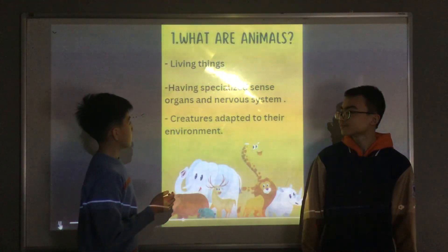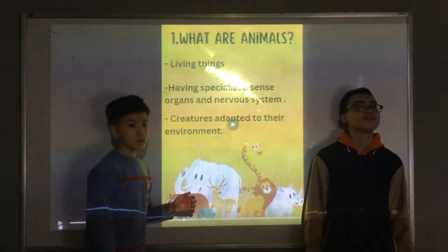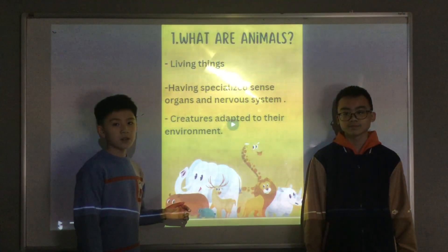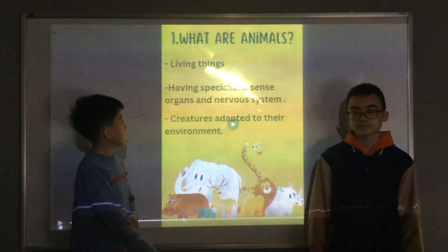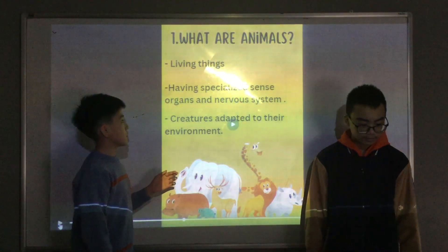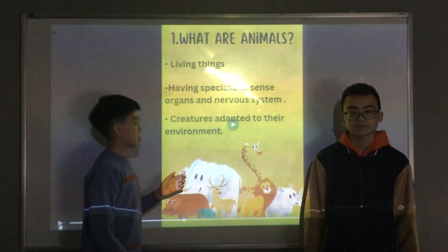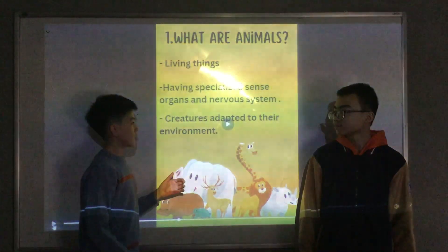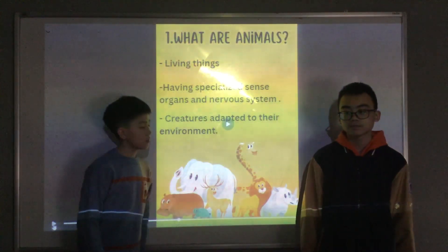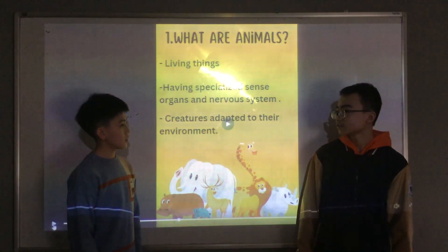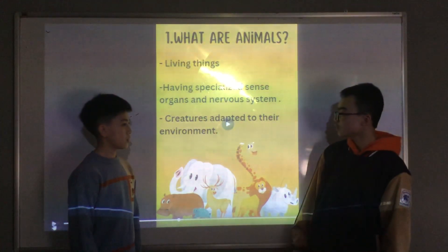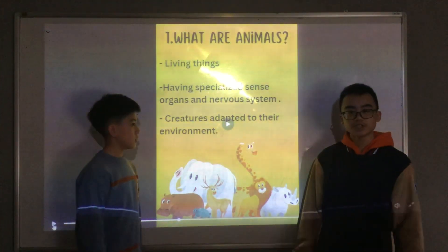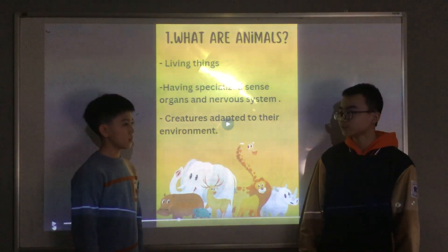First, what are animals? Animals are living things. They can make a whole use of space. They have a specialized nervous system. They can be adapted to their environment. Because different animals need different environments, like fish are different from land animals.